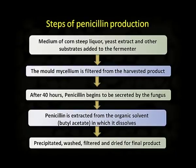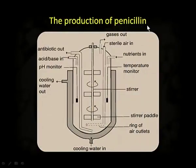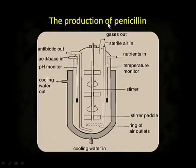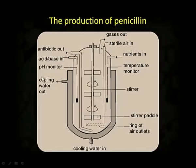We get penicillin G, which is butyl penicillinic acid. You can also understand the production of penicillin by fermentation process from this fermenter diagram. As you can see, there are some outlets and some inlets. The inlets include one for supplementing acid/base, a nutrient inlet, and sterile air inlet to speed up microorganism action.